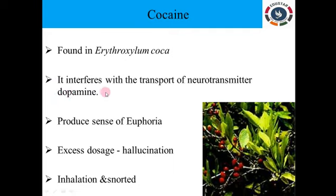Dopamine is a very important chemical messenger involved in motivation, memory, and regulating body movements. Cocaine interferes with this neurotransmitter and produces a sense of euphoria — a feeling of well-being — and increased energy, even in a person suffering from depression or illness. Excess dosage of these drugs leads to hallucination, which is a change in emotion, thought, and consciousness. These drugs are mostly abused by sports persons.